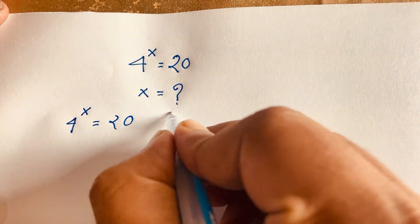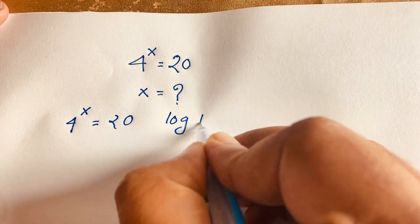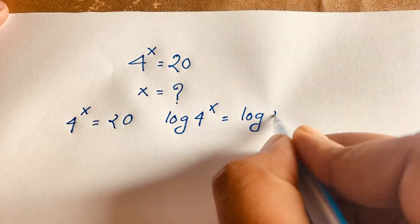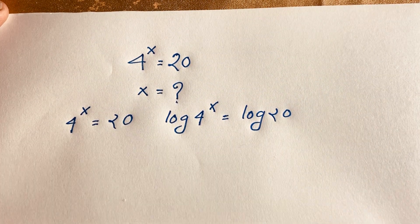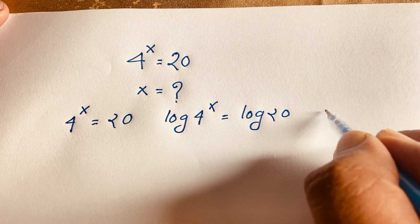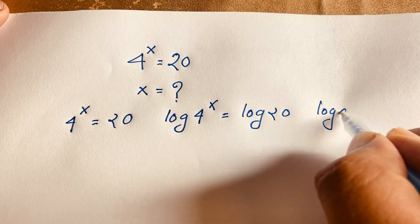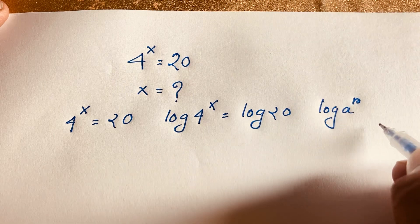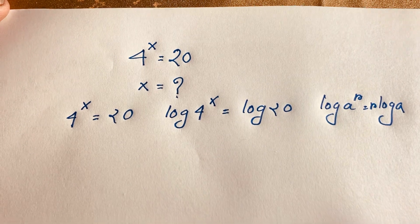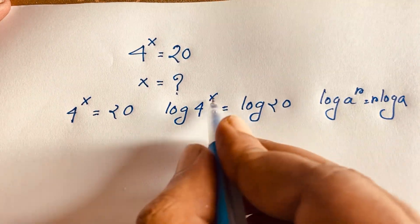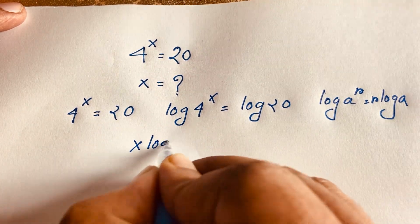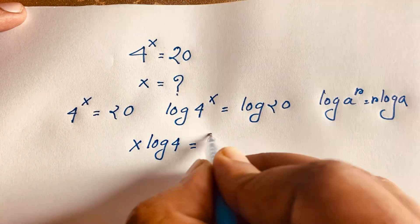I apply natural log to both sides: log of 4 to the power x is equal to log 20. According to the logarithm power rule, log a to the power r is equal to r log a. Using this law, the exponent moves to the front, so it becomes x log 4 is equal to log 20.